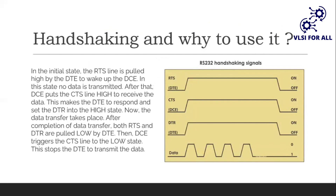RS-232 follows a handshaking process. Handshaking is the process of interchanging information signals between the sender and receiver — these signals build a communication link between the transmitter and receiver. There are two types of handshaking: hardware handshaking and software handshaking. Handshaking is used to send and receive information without loss of data, and it is necessary to maintain robust communication between the transmitter and receiver.